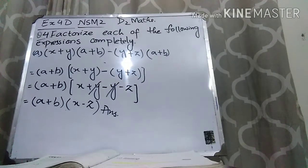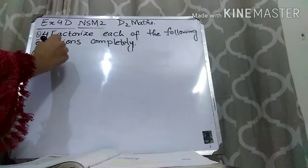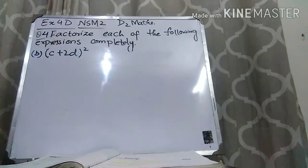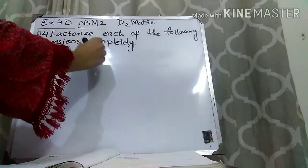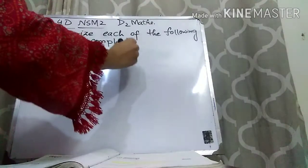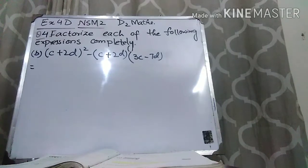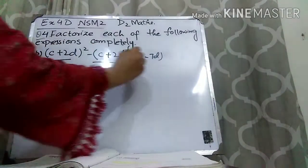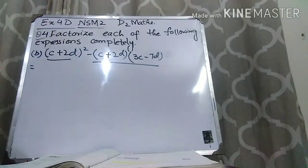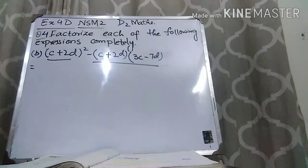The answer is (A plus B)(x minus z). Now let's move to part b. Part b is: (c plus 2d) squared minus (c plus 2d)(3c minus 7d). We can see that c plus 2d is common in both terms — here the power of c plus 2d is 2 and here the power is 1.